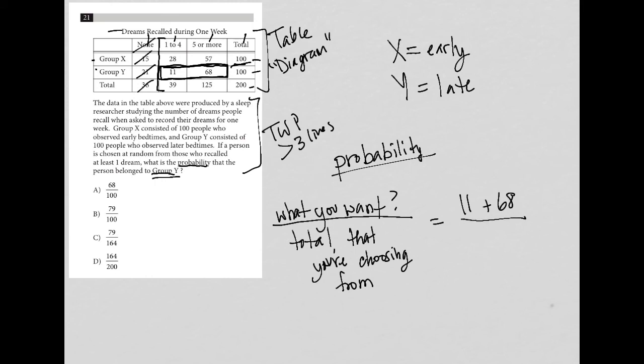Now the total that I'm choosing from will be from both group X and group Y. And in this case I can use these total values here. There's 39 from both X and Y that recalled one to four dreams, and there's 125 people from both group X and Y who recalled five or more dreams. So 39 plus 125. That's what I want out of what I'm choosing from.